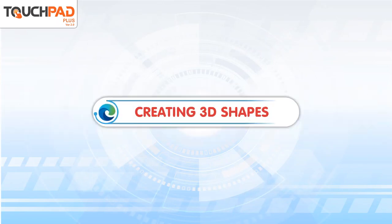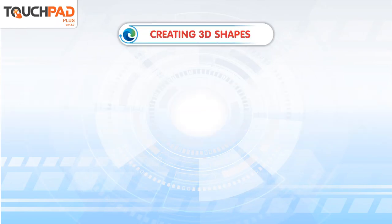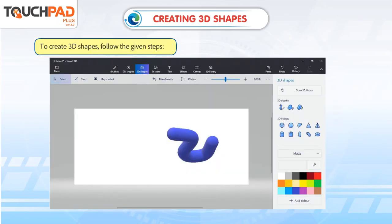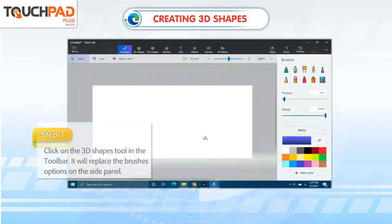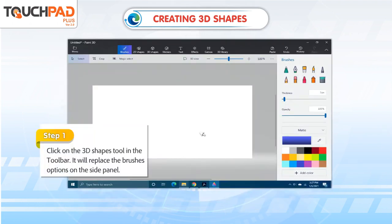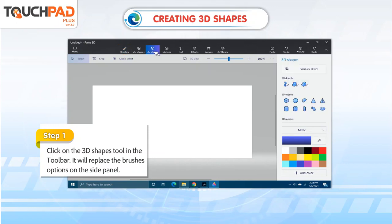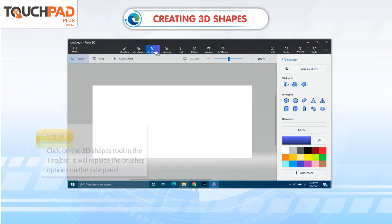Creating 3D Shapes. To create 3D shapes, follow the given steps. Step 1: Click on the 3D Shapes tool in the toolbar. It will replace the brushes options on the side panel.